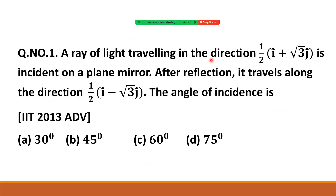Problem 1: A ray of light traveling in the direction (1/2)(i-cap + √3 j-cap) — which is a unit vector since its magnitude is √(1/4 + 3/4) = 1 — is incident on a plane mirror. After reflection it travels along (1/2)(i-cap − √3 j-cap). Find the angle of incidence.